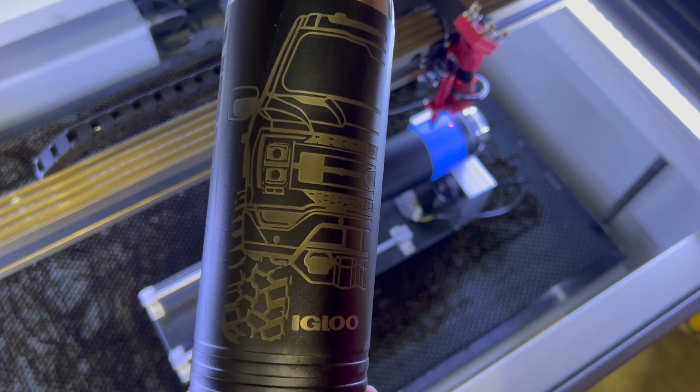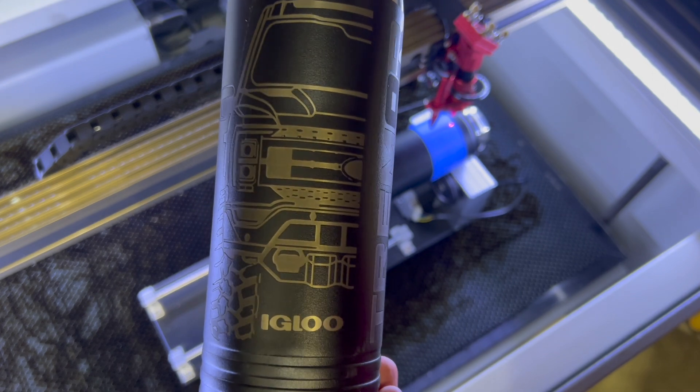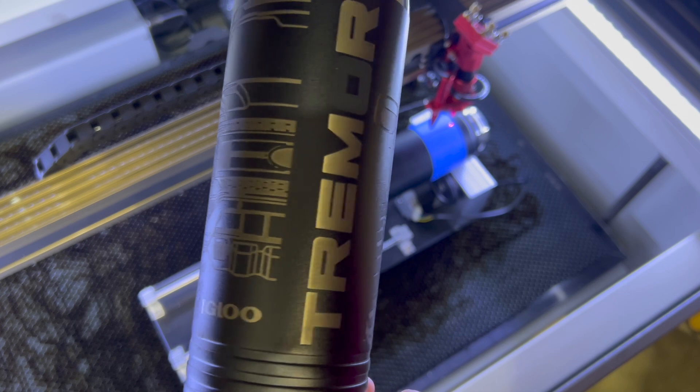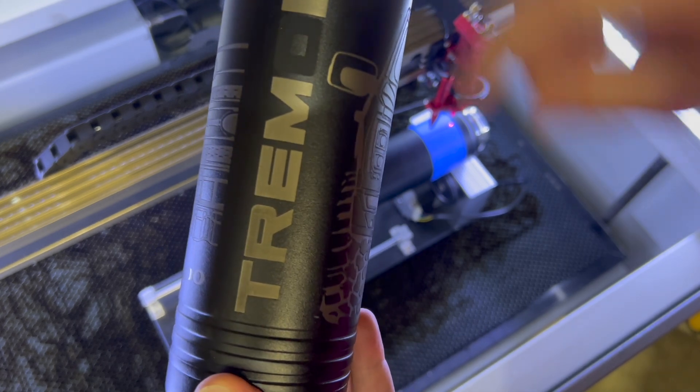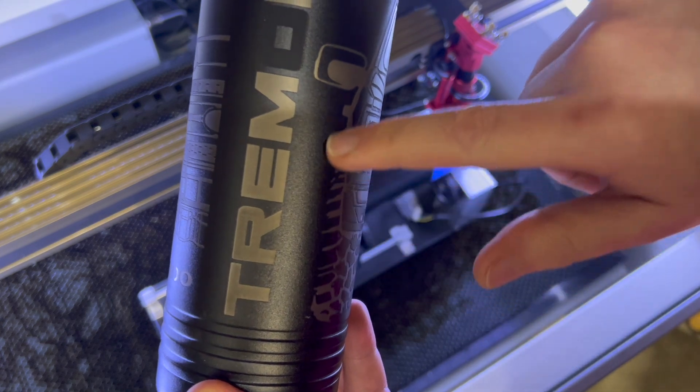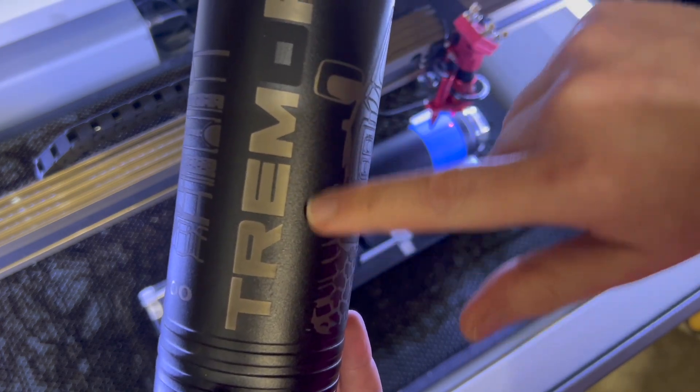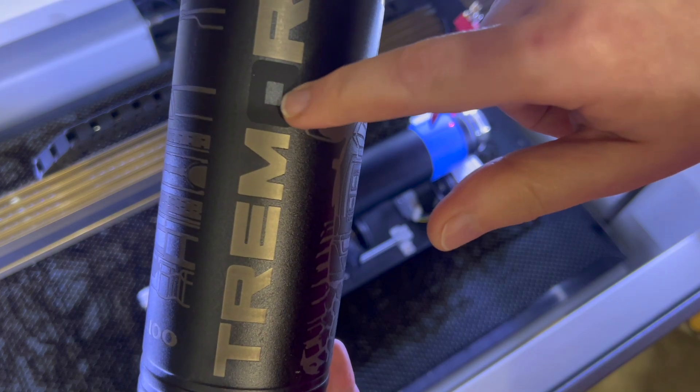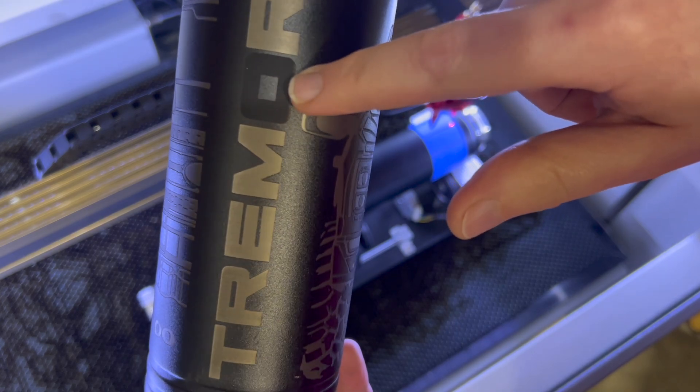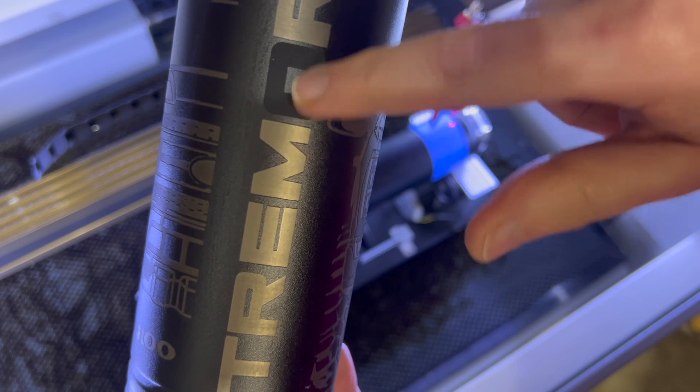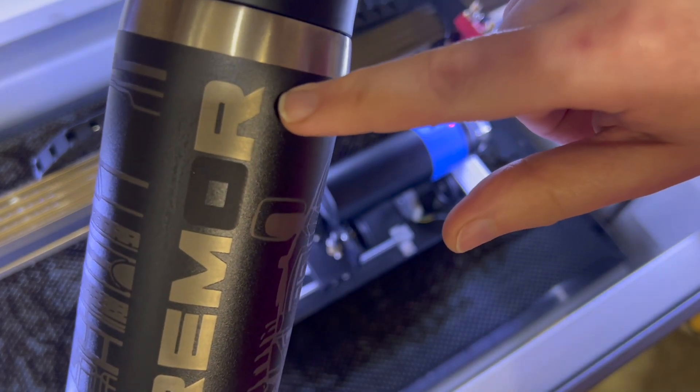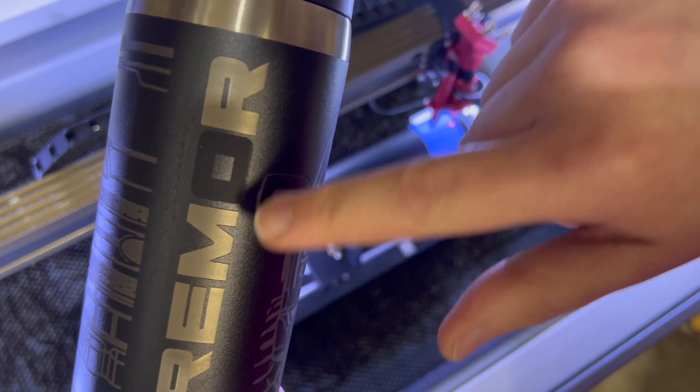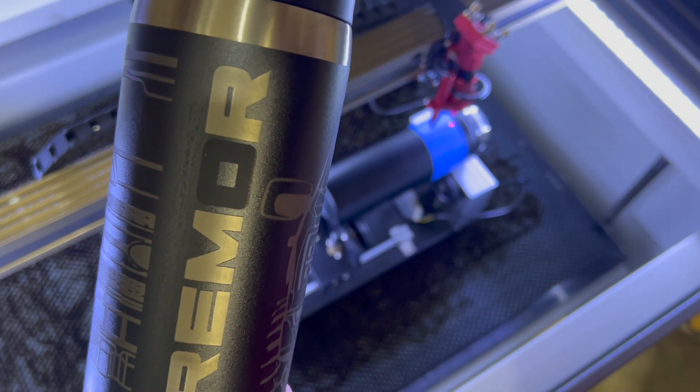So here's what I'm going to engrave on this one. I have a Ford Tremor F-150 truck. As you can see with this test piece, I tested the different strengths and power for the word Tremor here. As you can see clearly this one is way too low a power and it took off a little bit of the paint but not much.